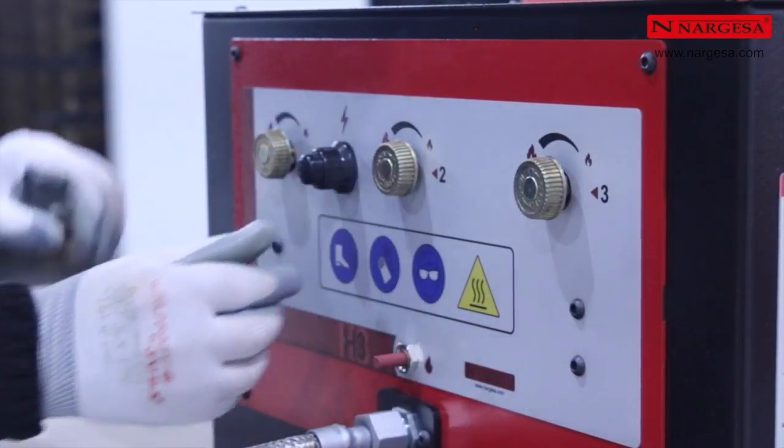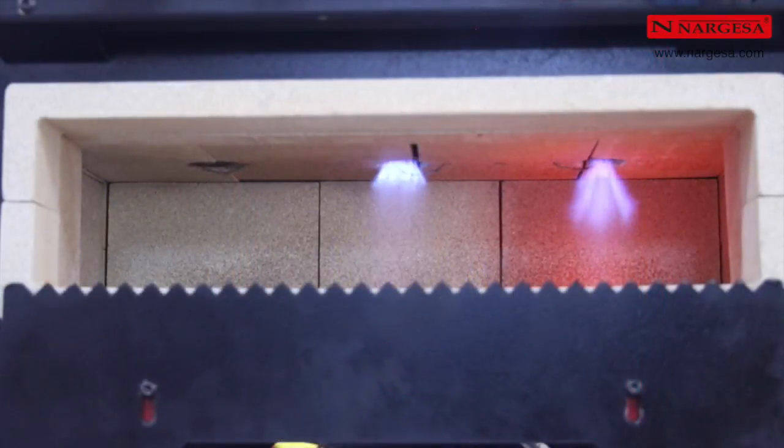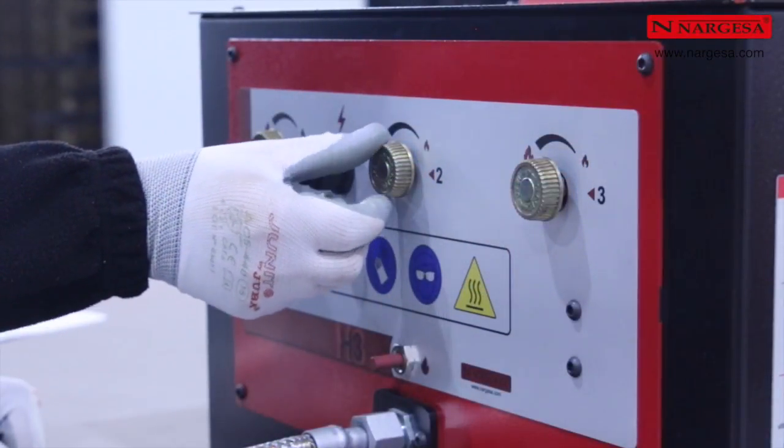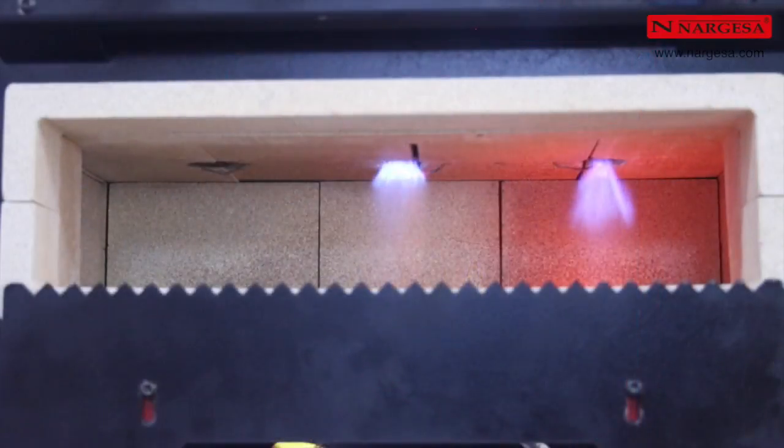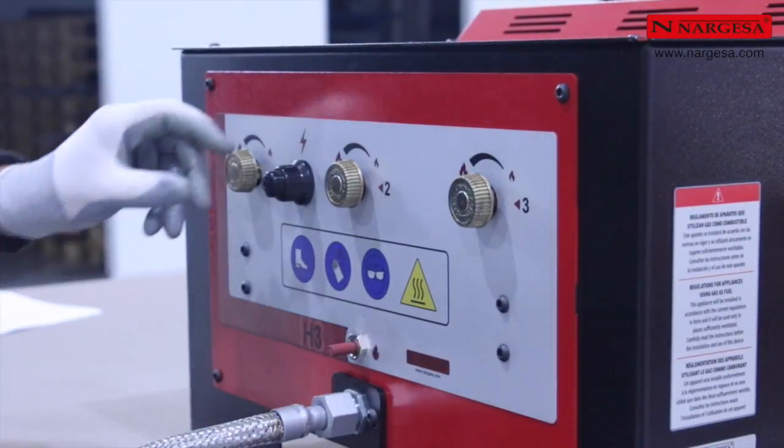Si on veut travailler avec les trois brûleurs, une fois que le brûleur 1 est allumé, on recommence à appuyer sur le bouton d'allumage électronique et on ouvre progressivement la vanne de gaz 2 jusqu'au maximum. Ensuite, on répète la même opération en ouvrant la vanne de gaz 3 pour allumer ce dernier brûleur.